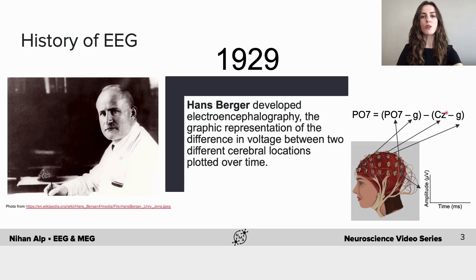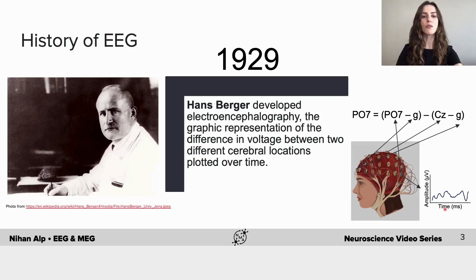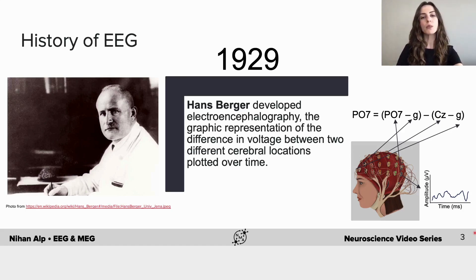Then we get the voltage for a reference electrode — here it's Cz — so the voltage difference between the reference electrode and the ground electrode. Later we plot the signal over time, which is a graphic representation of the difference in voltage between two cerebral locations, here PO7 and the reference electrode. The reference electrode offers, as suggested by its name, a reference for the measured signal. You can think of this as measuring how high a mountain is — you need a reference point, which is generally taken as sea level. This allows us to measure and compare the height of all mountains using the same reference point.